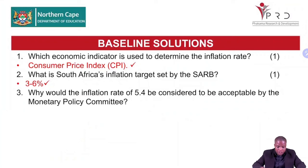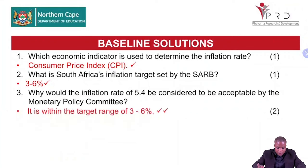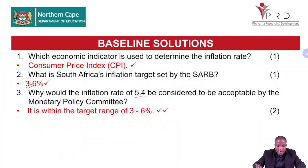What is South Africa's inflation target set by the Reserve Bank? Our inflation target is three to six percent. When we did price stability under macroeconomic objectives, we mentioned that our inflation target is three to six percent. Would an inflation rate of 5.4% be considered acceptable by the Monetary Policy Committee? Yes — 5.4 is within the target range of three to six percent, so that inflation will be accepted by the MPC.